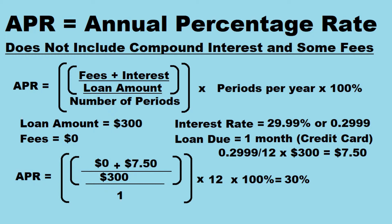If you took the same loan, or you borrowed that $300 and charged it to your credit card — there is a grace period, and if you pay it within the first billing cycle you're not actually paying interest — but let's say you borrowed it for 30 days. Your interest payment would be 29.99% divided by 12 months, multiplied by $300, which equals $7.50. So if you have $0 in fees, you pay everything on time, and you have $7.50 in your interest payment, you divide that by your $300 loan. The number of periods is a one-month period and there's 12 months in a year, multiply by 100%, and you'll find that you have a 30% APR on that borrowed money.